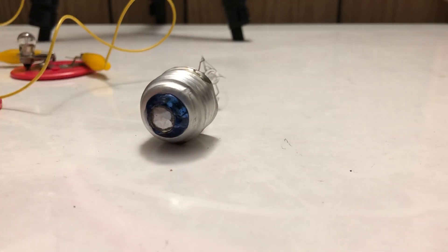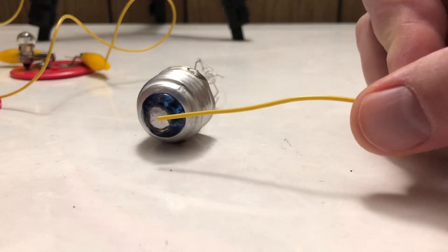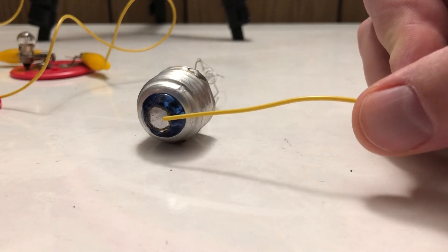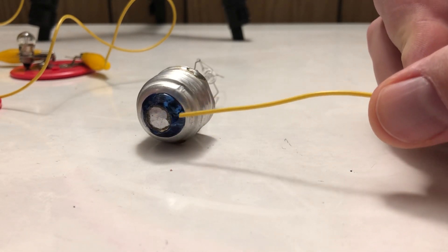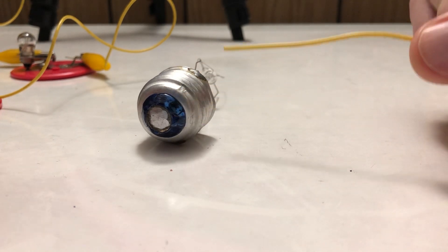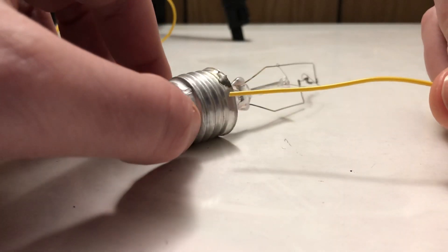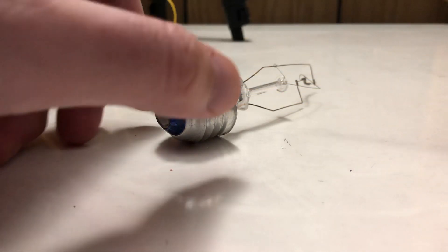You can see that it also has a tip like our small light bulb, and you can see it's shiny and metallic. Then there is a black ring, and just like the small light bulb, we have the threaded section.